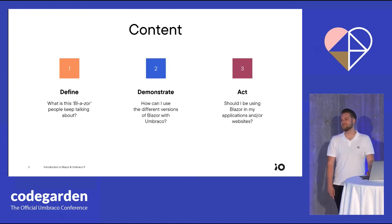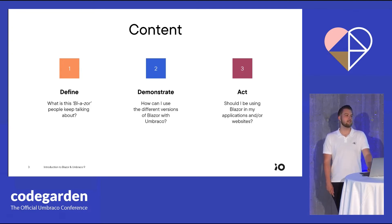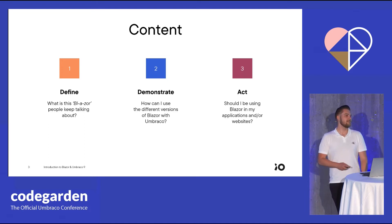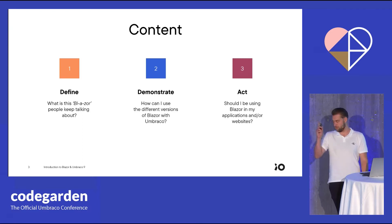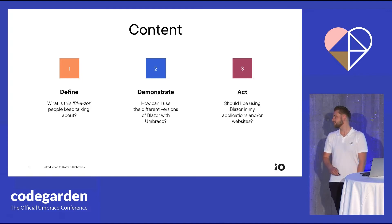But enough about me, let's talk about Blazor and Umbraco 9. During this talk, we're going to be discussing three different subject matters. First off, we'll be taking a look at Blazor itself by answering the question: what is this Blazor people keep talking about? Next up, we'll take a look at what's possible and needed to integrate Blazor into an existing or new Umbraco application. And finally, we'll be taking a look at the pros and cons of using Blazor with Umbraco 9, so that we can determine whether or not you should be using Blazor in your applications.